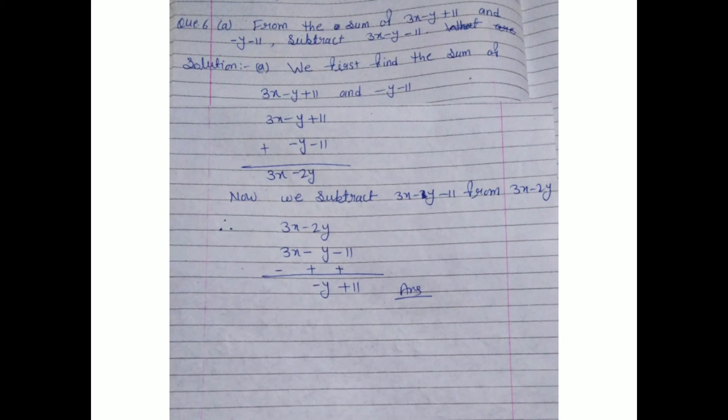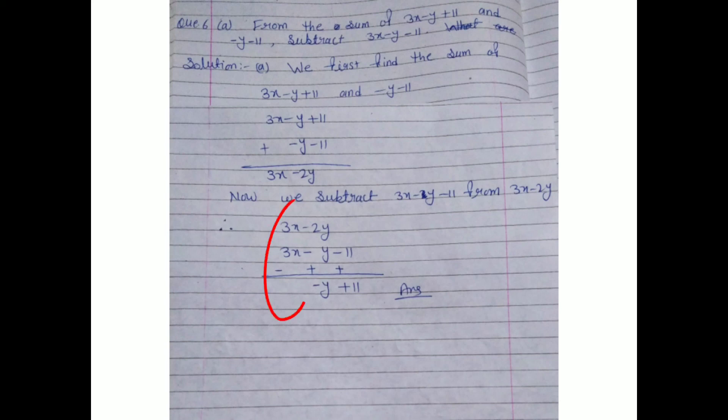Now from that subtraction result, 3x minus 2y, we subtract 3x minus y minus 11. Write them vertically, aligning the same variables: 3x minus 2y on top, and 3x minus y minus 11 below.